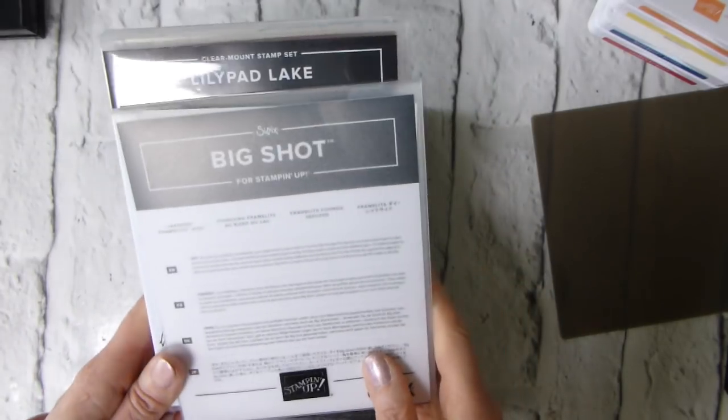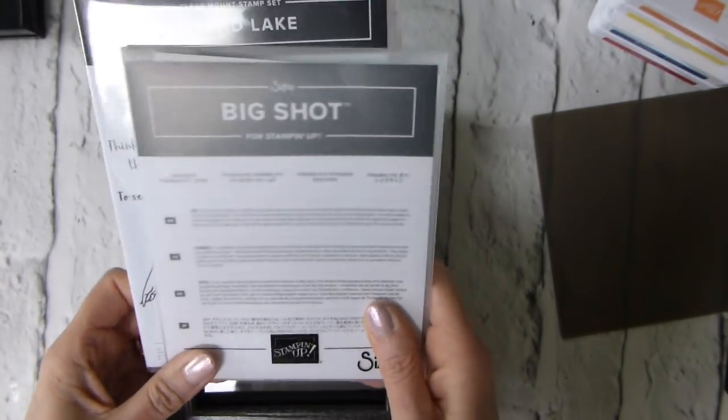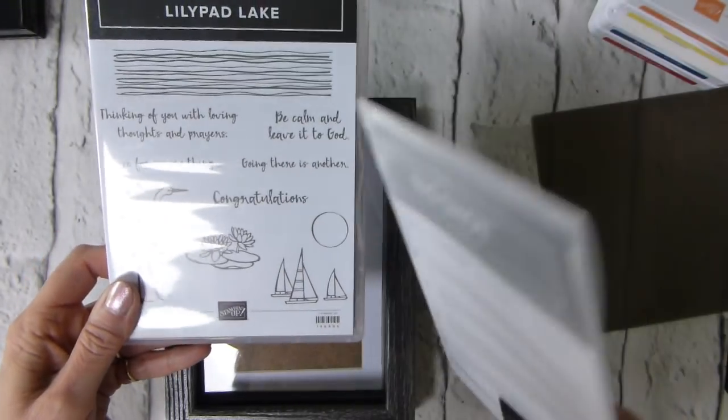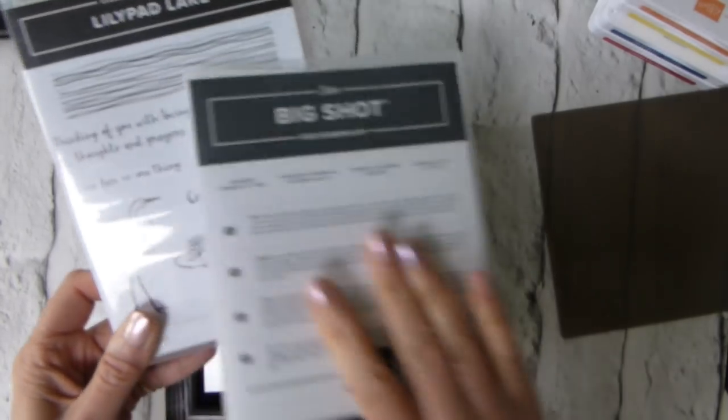So I am using the Lilypad Lake bundle. The Lilypad Lake bundle is obviously the stamp set, which I've got in clear mount. It is available in wood mount as well, and the framelit dies.